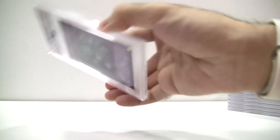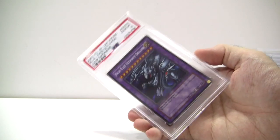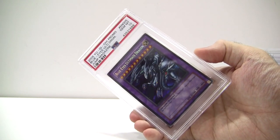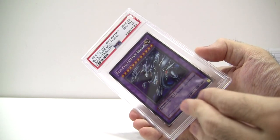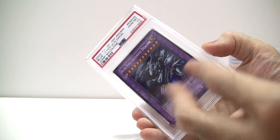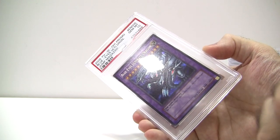And last but not least, a Shonen Jump Magazine promo JMP-EN-005 Blue Eyes Ultimate Dragon. Now, the thing about this guy is that there are two versions of this promo as well, a Secret Rare with a sparkly silver text and an Ultra Rare, the one with gold text.